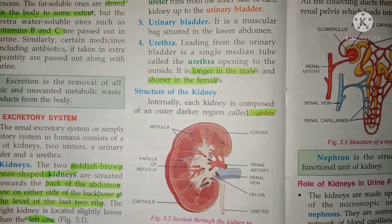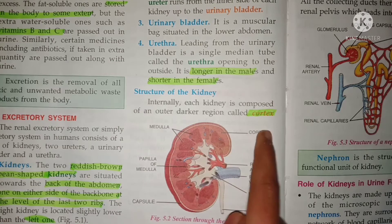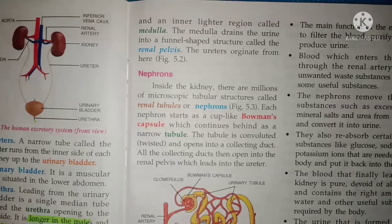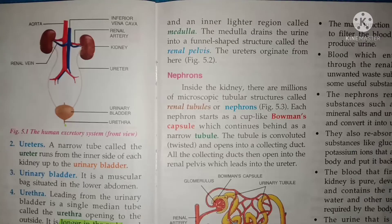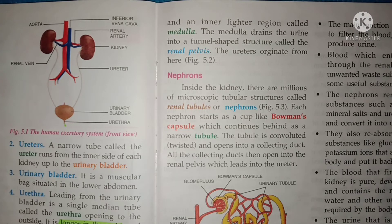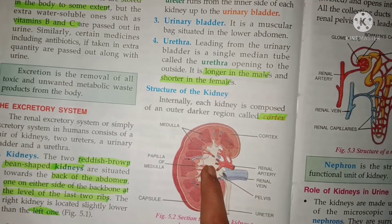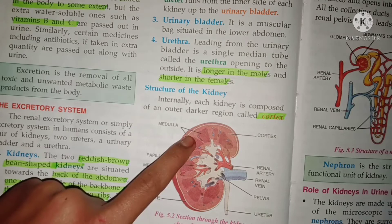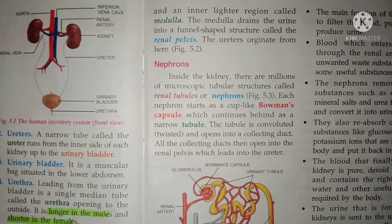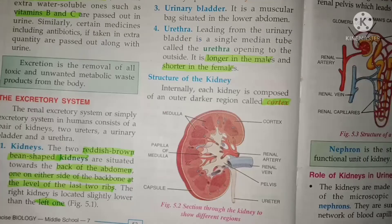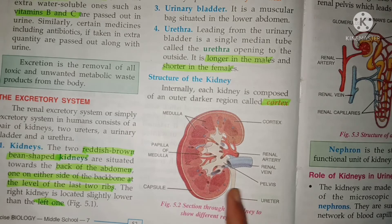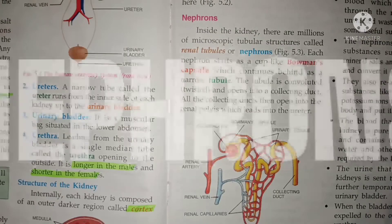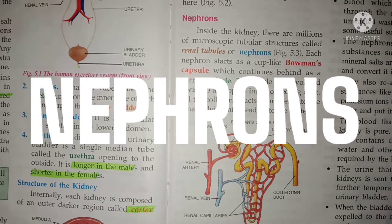Now, the internal structure of the kidney: each kidney is composed of an outer dark region called the cortex — as marked in this image — and an inner light region called the medulla. The medulla drains the urine into a funnel-like structure called the renal pelvis. The ureters also originate from the renal pelvis.